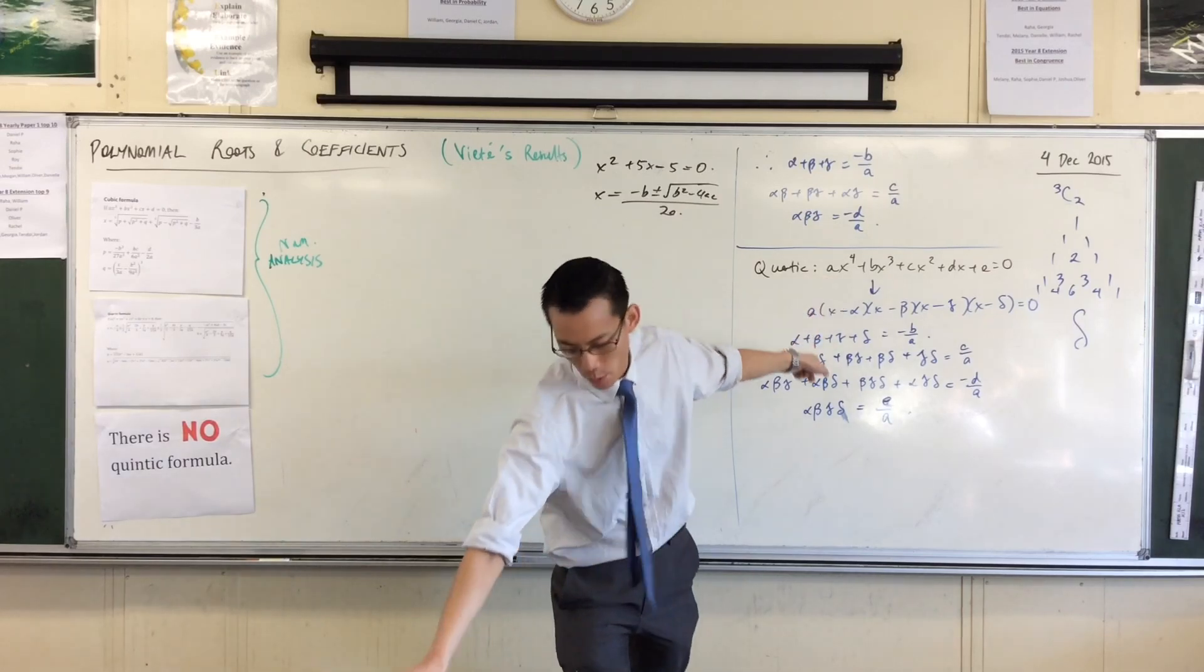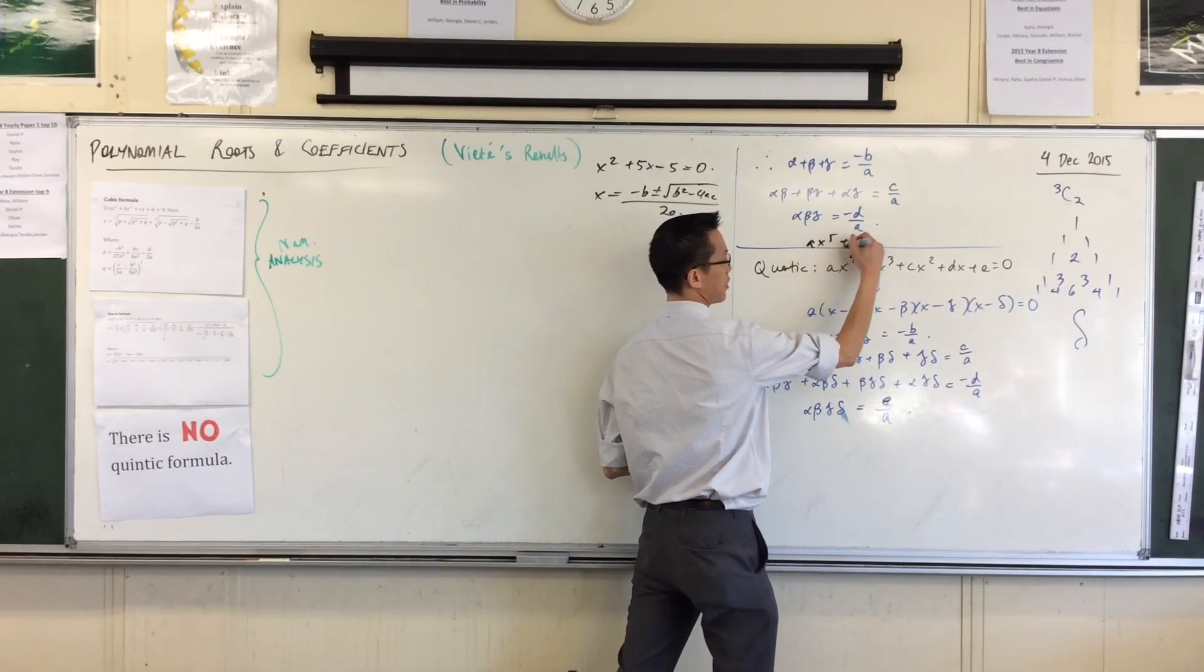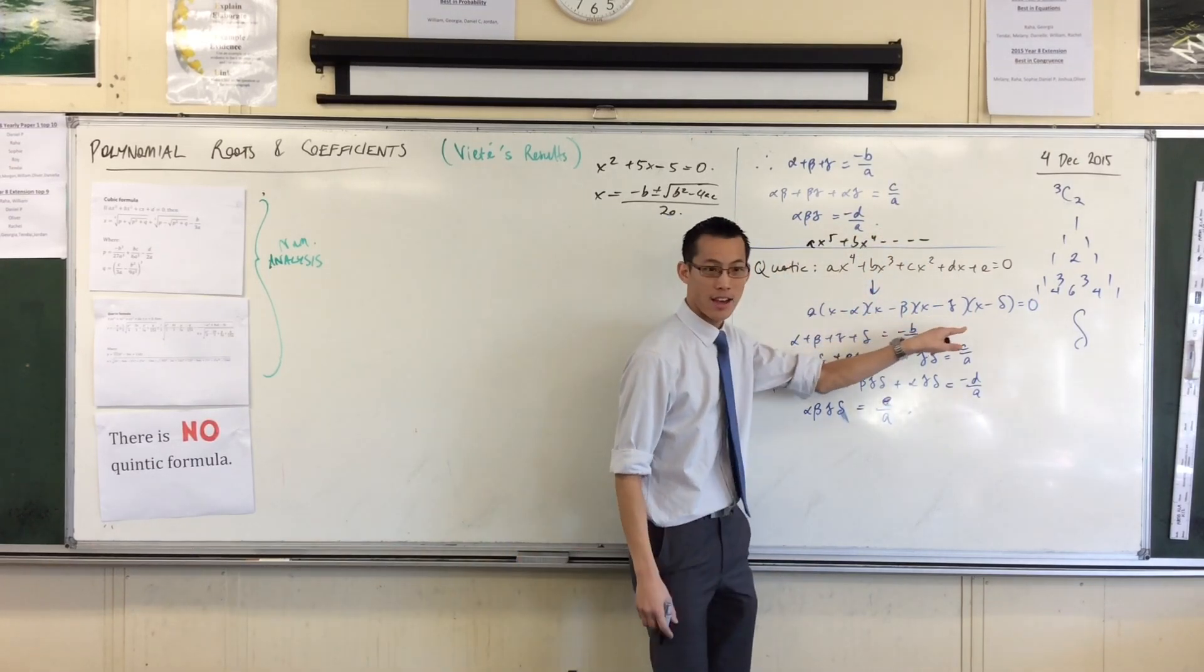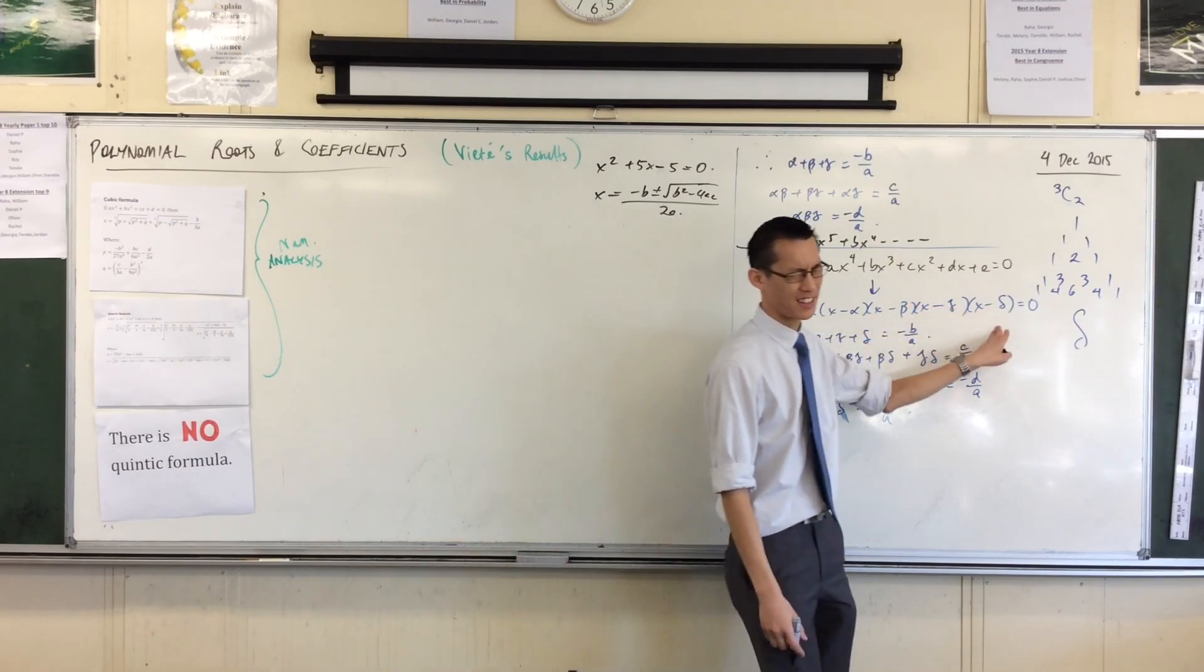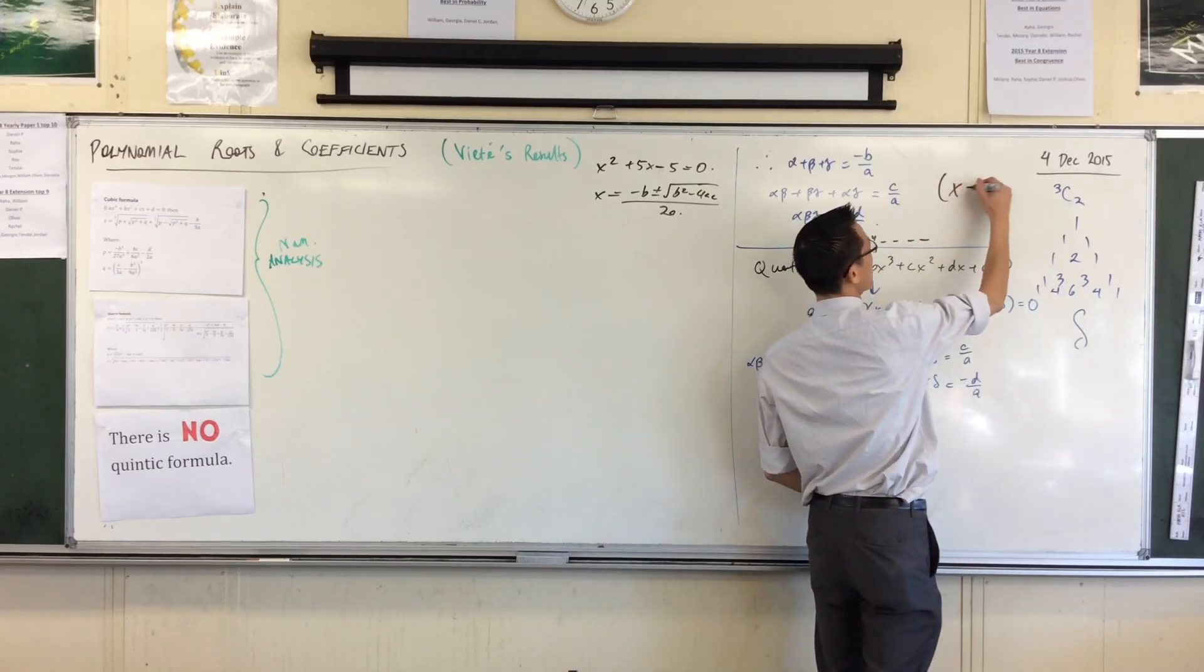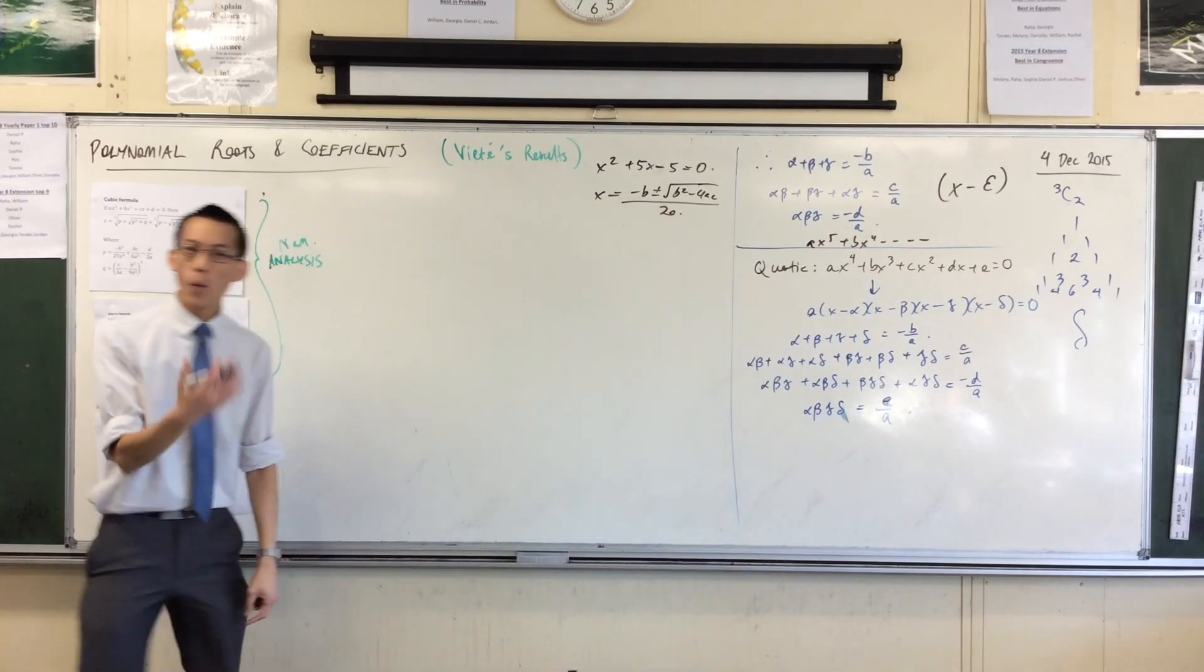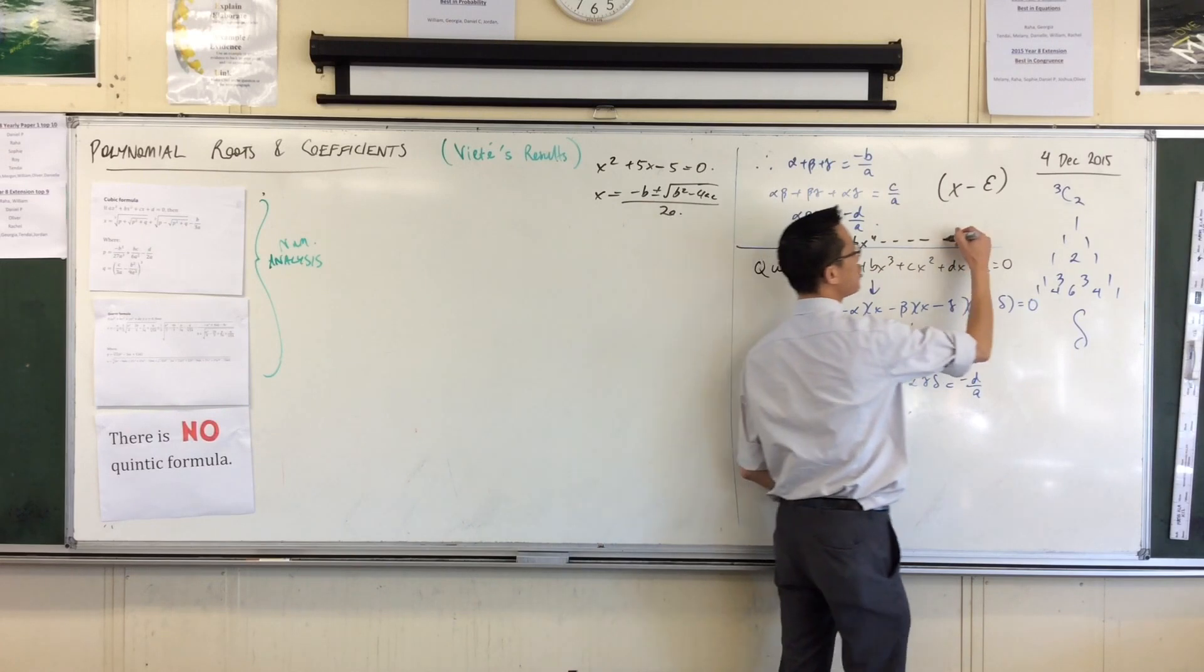I could very easily write ax⁵ + bx⁴... and then over here you'd have (x - α)(x - β)(x - γ)(x - δ)(x - ε) would be the next one. Epsilon is the last one—excellent. Actually, it's a shame because epsilon is really easy to do. But anyway, now we can... it's a u with a reverse tail.